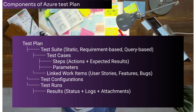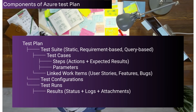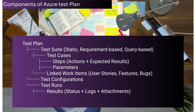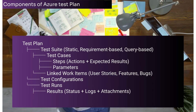Now let's look at Test Cases — individual testing scenarios with steps, expected outcomes and results. Attributes include: title, assigned to, priority, automation status (manual or automated), parameters for data-driven testing, and test steps with action and expected result for each step.